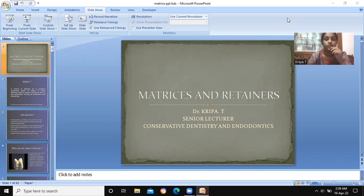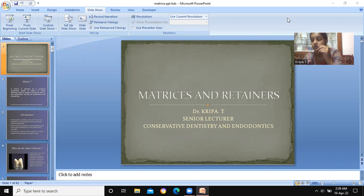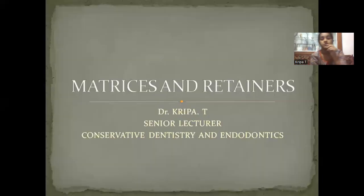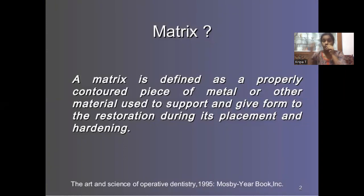Hello, hope I am audible. Today's topic of discussion is matrices and retainers. I am Dr. Kripa, Senior Lecturer in the Department of Conservative Dentistry at Royal Dental College. A matrix is defined as a properly contoured piece of metal or other material used to support and give form to the restoration while its placement as well as hardening.